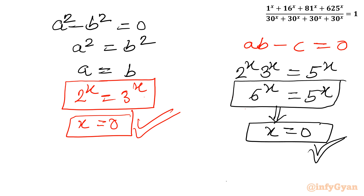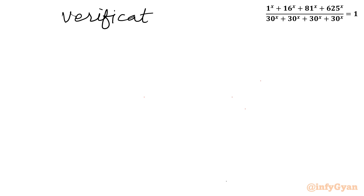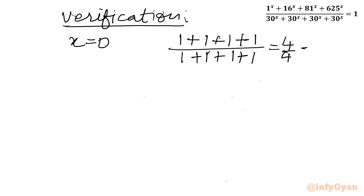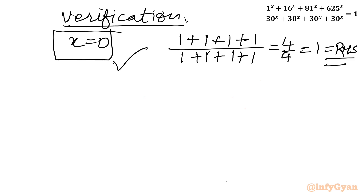It satisfies all three sets of equations, so our final solution is x equals 0. Let us verify: putting x equals 0, the numerator gives 1^0 plus 16^0 plus 81^0 plus 625^0, which is 1 plus 1 plus 1 plus 1 equals 4. Divided by 30^0, which is 1. So it is 4 over 4 equals 1, which matches the right-hand side. This confirms x equals 0. I hope you like this video — thank you for watching! Like, share, and subscribe.